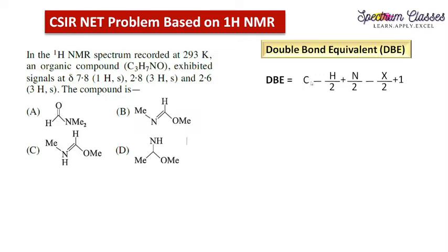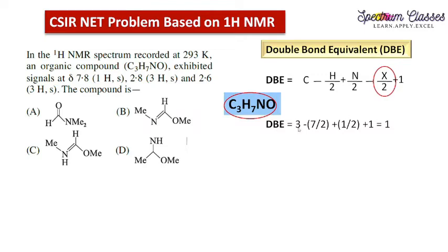Double bond equivalence can be calculated by the formula: DBE = C - H/2 + N/2 - X/2 + 1, where C is carbon, H is hydrogen, N is nitrogen, and X is halogens. No halogen is present, so we will discard this term from the formula. Now we will put the values in this formula to calculate the double bond equivalence.